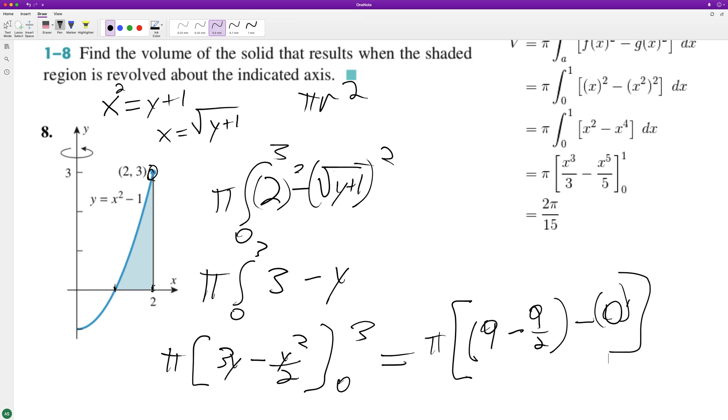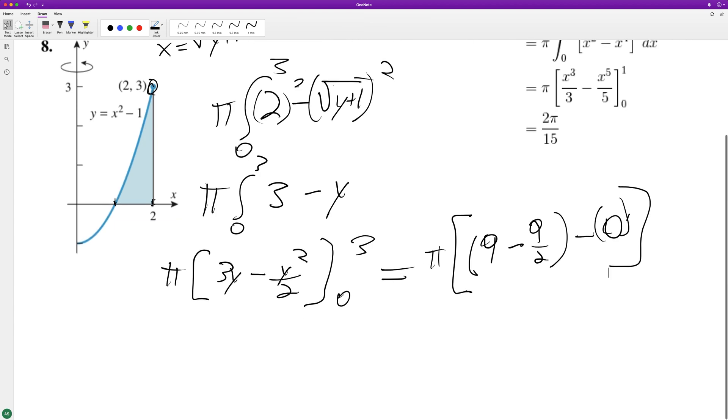With these, it just goes to zero. So nine over two, and we just end up with nine minus nine over two is nine over two. So we end up with nine pi over two, and that's it.